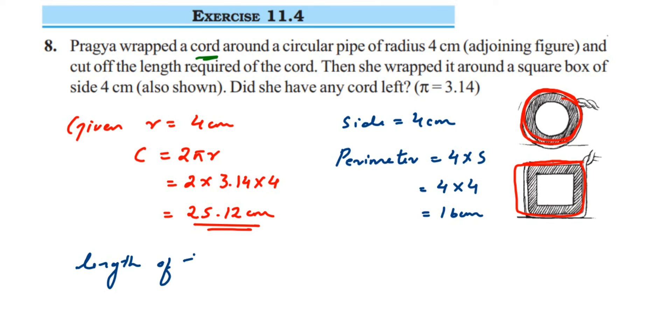So let us find out how much cord is left. Length of the cord left is equal to - now we are not asking, I'm just finding it out - it will be 25.12 minus 16, which is equal to 9.12 centimeters. So we can say that yes, the cord is left.